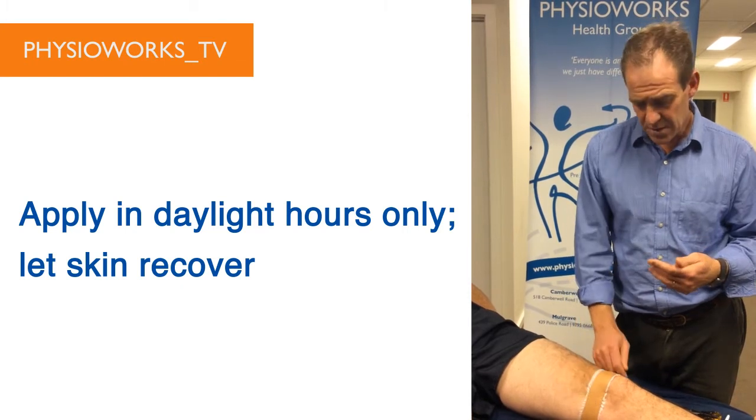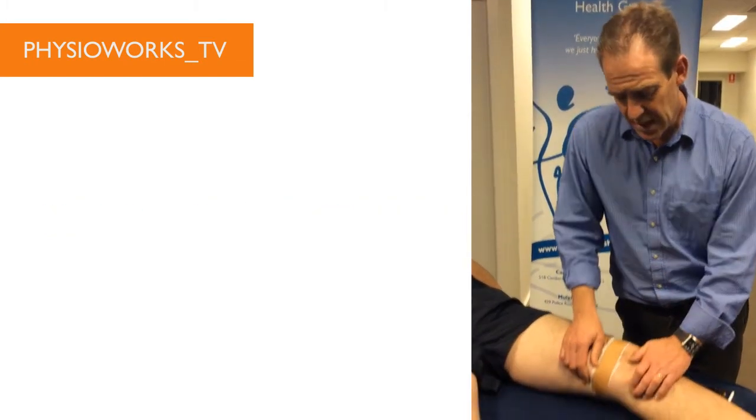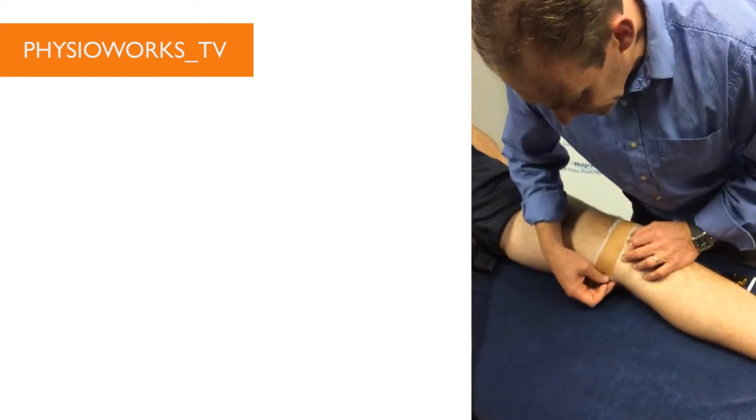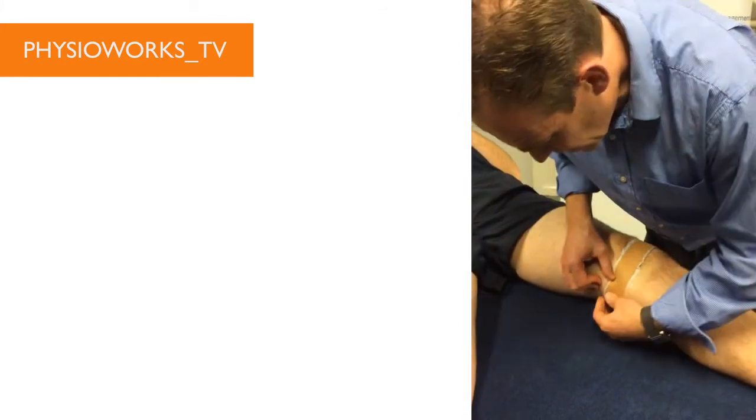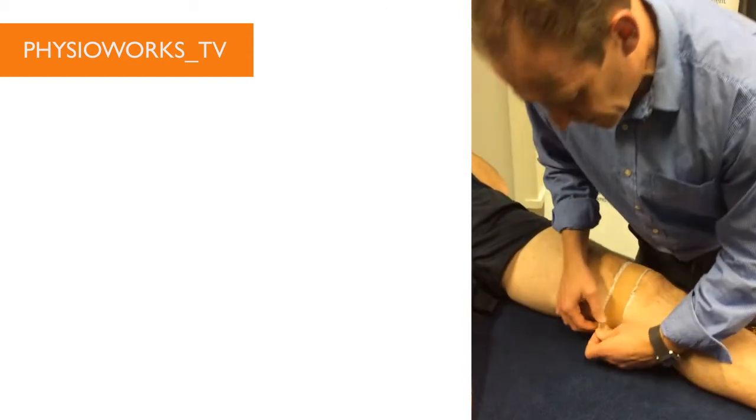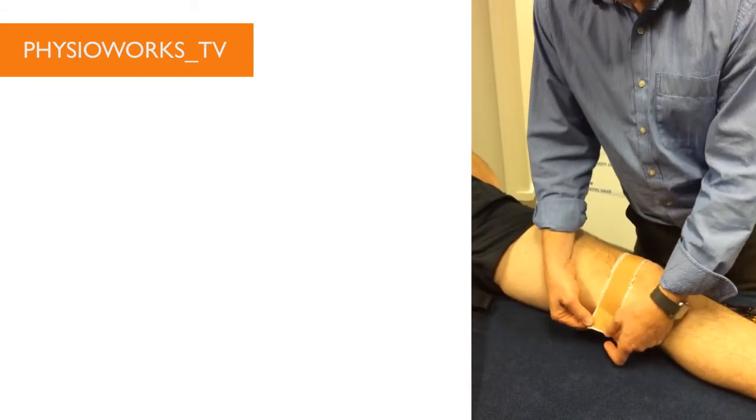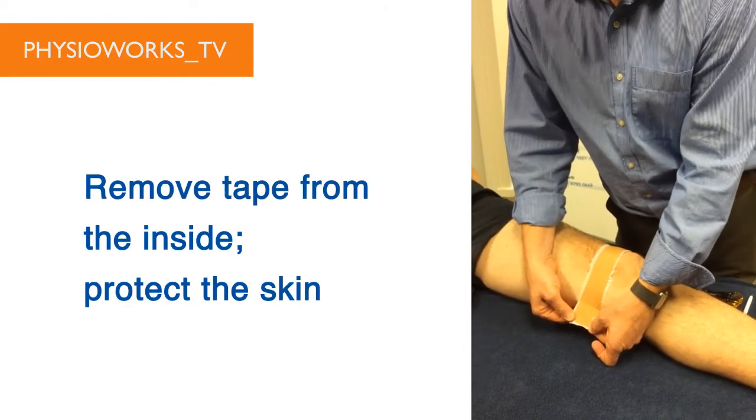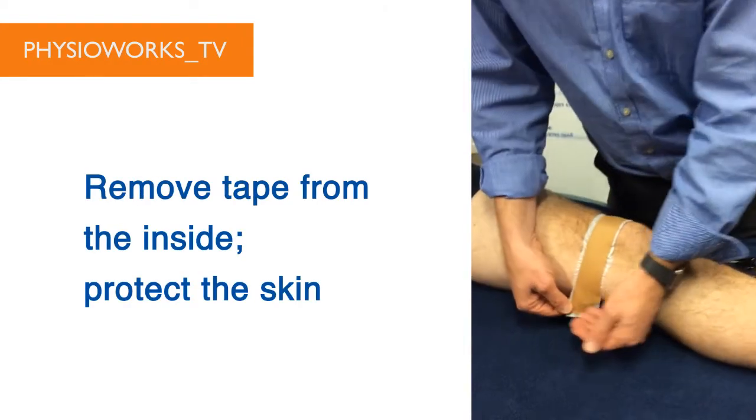When we take the tape off, you don't tear it quickly. We always start on the inside, which is where the skin can be quite fragile. Just grab a corner. As you'll notice here, the brown tape doesn't make contact with the skin. The white tape makes contact with the skin and the brown sits on the white.